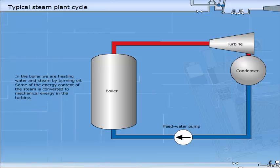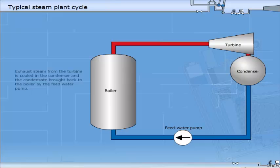In the boiler, we are heating water and steam by burning oil. Some of the energy content of the steam is converted to mechanical energy in the turbine. Exhaust steam from the turbine is cooled in the condenser, and the condensate brought back to the boiler by the feed water pump. The series of processes involved is called a steam cycle.